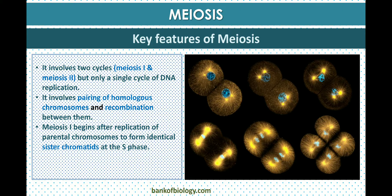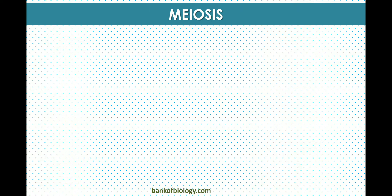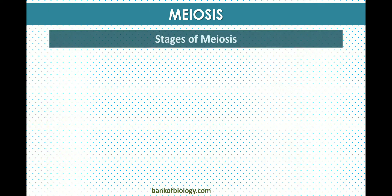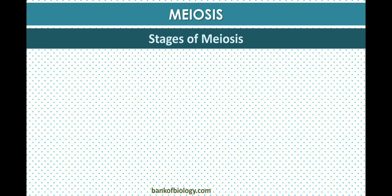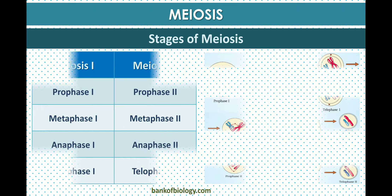Meiosis one begins after the replication of parental chromosomes to form identical sister chromatids at the S phase. Four haploid cells are formed at the end of meiosis two.